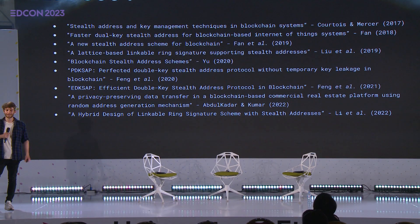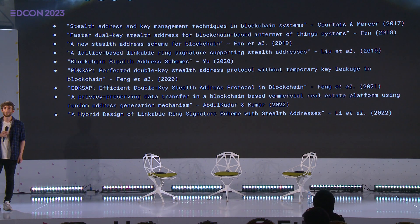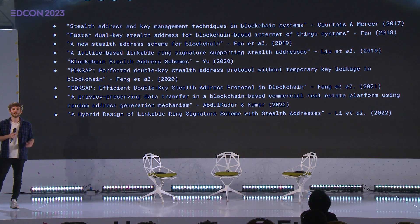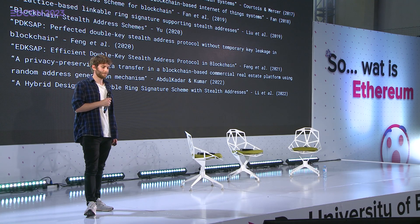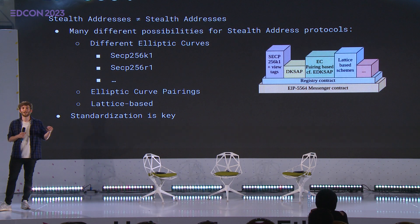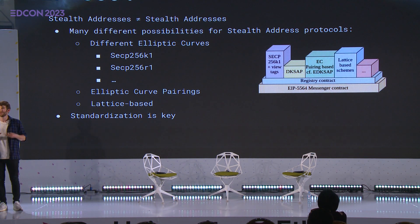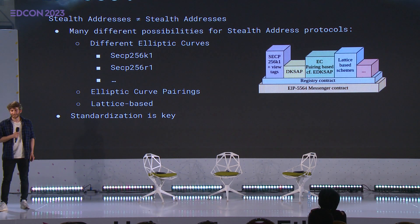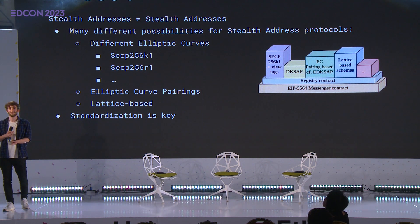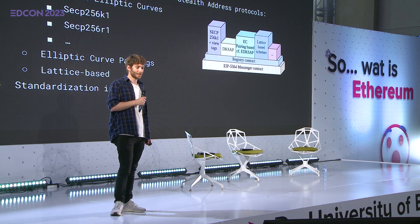Standardization is key. We need some way to tell the recipient how we calculated the stealth address, because otherwise the recipient has no way to find out which protocol was used. This is exactly where ERC 5564 comes in: it proposes a standardized framework where we can transmit the information required by the recipient to know which exact stealth address protocol was used, so that the recipient can directly continue parsing in the right way.